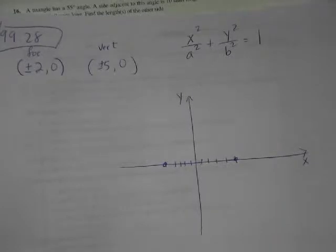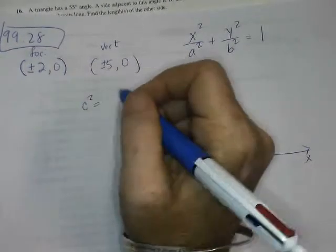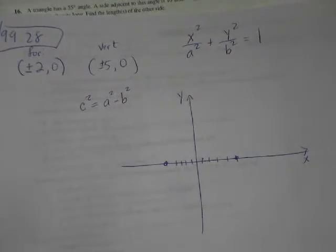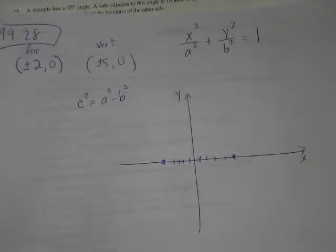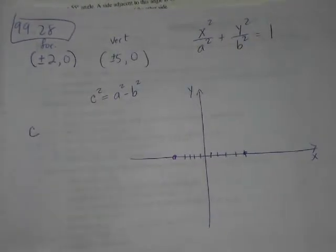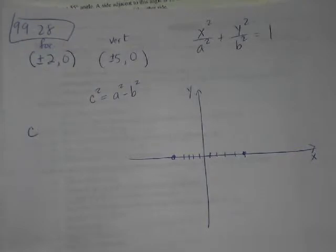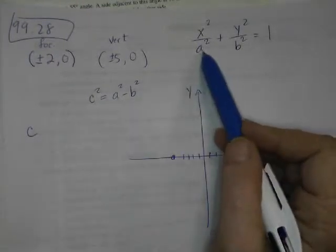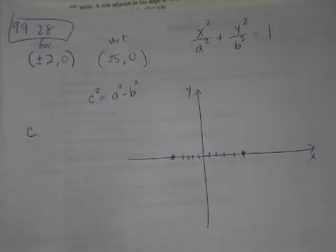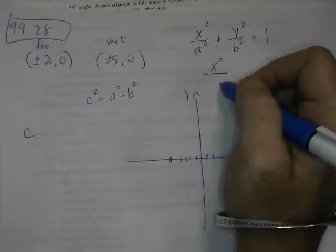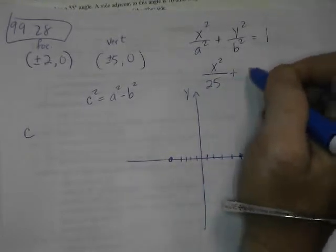So there's this little relationship between, remember it was like c squared equals, it wasn't a squared plus b squared, it's a squared minus b squared, wasn't it? Do you guys remember that? C is the distance between the center and the foci. A is just that number, which is actually, we can get that, we have that right now, don't we? A is five. Because it's going to be a 25 down here, right? B, we don't know what b is.